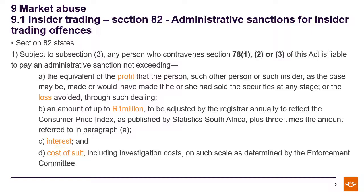So now we are looking at: you've committed these offenses, what happens now? Section 82 is the sanctions for insider trading. Section 82 first deals with section 78.1, 2, or 3 — this is with regards to dealing on your own account or on behalf of someone else. The sanction is the equivalent of the profit made or the loss avoided, plus amounts up to a million rand, plus interest and the cost of the suit. That is the administrative penalty you will have to pay.